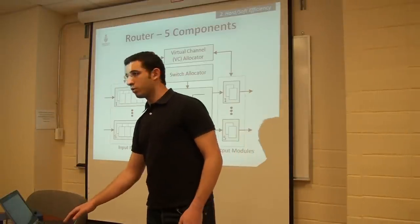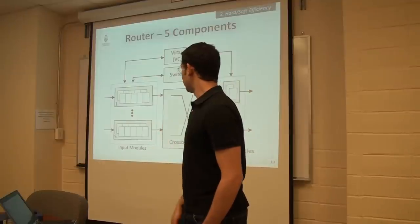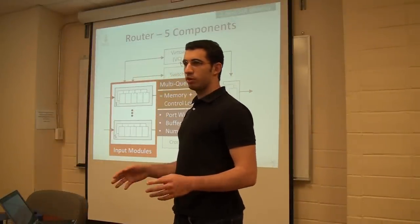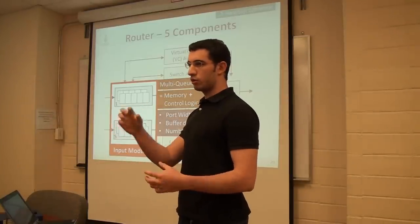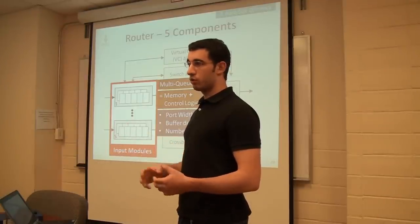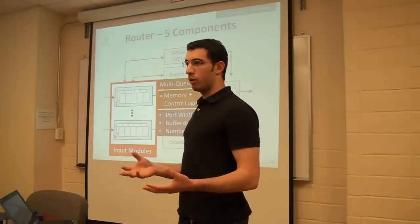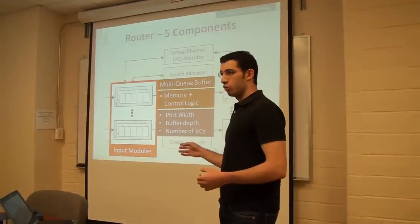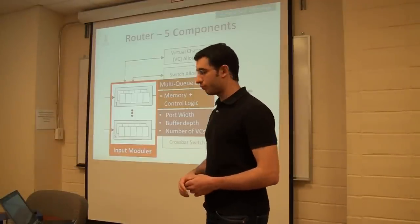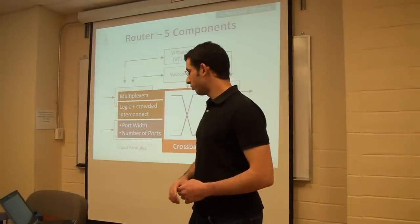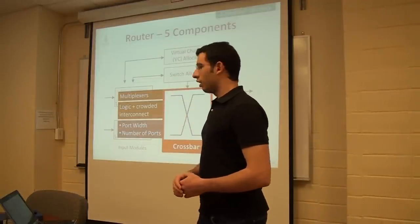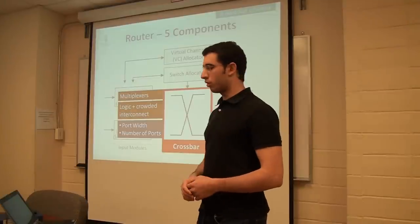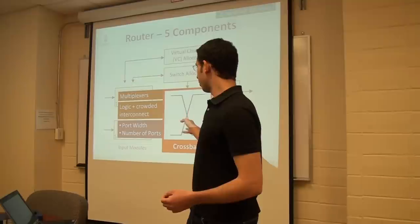We divide the router into five components. The first is the input module: a multi-queue buffer consisting of memory divided into separate virtual queues called virtual channels, with control logic and routing logic. Parameters affecting this component are port width, buffer depth, and number of virtual channels. The second component is the crossbar — the data path multiplexers — with parameters port width and number of ports.